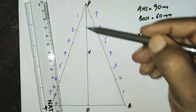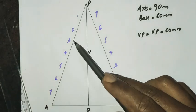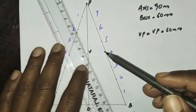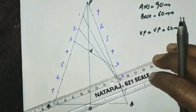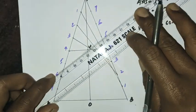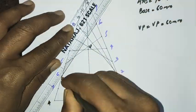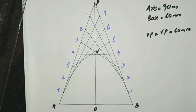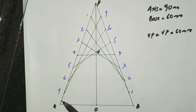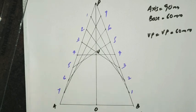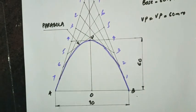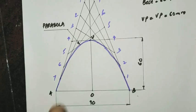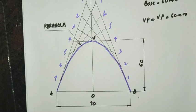You need one and one join together, two and two join together, three and three join together. One and two join together, three and two join together. The parabola is completed.